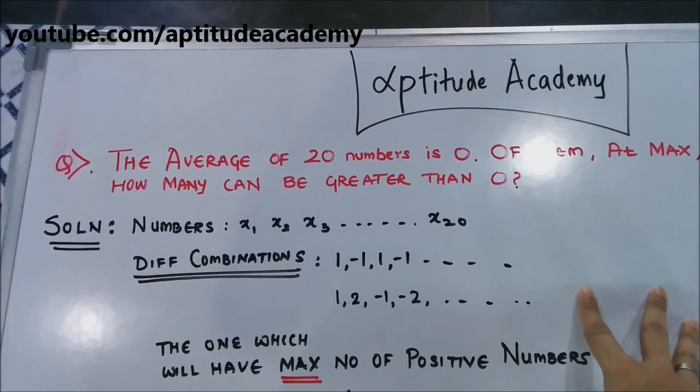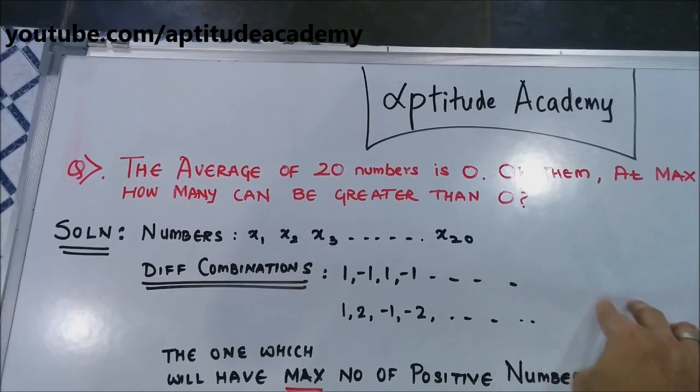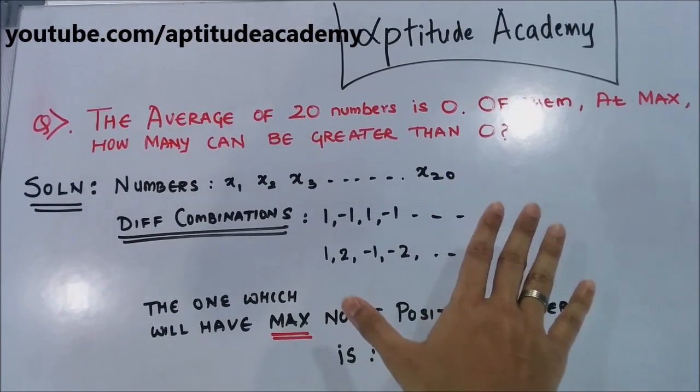So here what they are telling you is that you have 20 numbers. Let's say the numbers are x1 through x20. They are saying that when you get the average of these 20 numbers, they will be 0. So basically what they are telling you is that the sum of these 20 numbers should be 0.